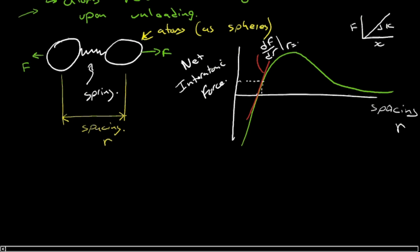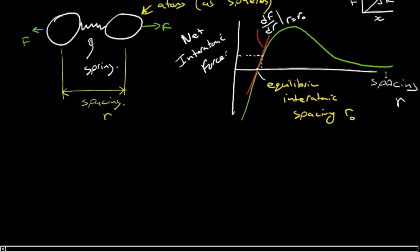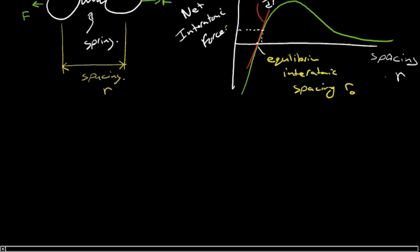That's the equilibrium interatomic spacing. Equilibrium interatomic spacing gets the designation r0, where net force is zero. So the slope of that curve tells us the relationship between force and displacement at the equilibrium spacing or the rest spacing. So we can make this nice little concluding statement here.